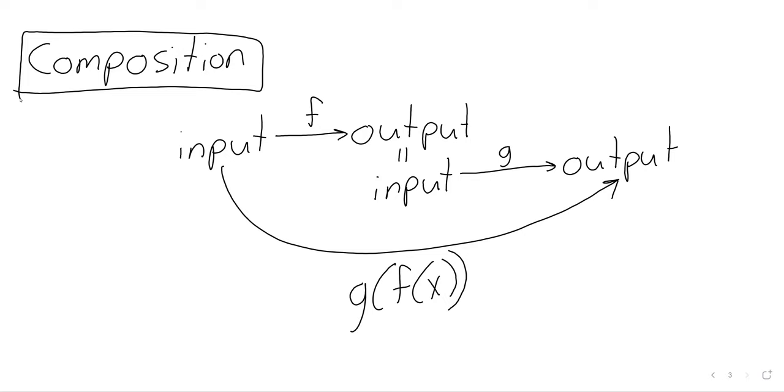Reading left to right, first we've got f, then we've got g. But this composition is g of f of x. The second function gets written first.